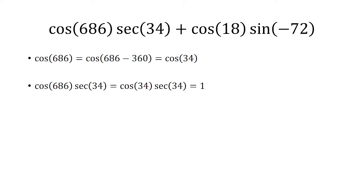So then when I multiply cosine of 686 with secant of 34, that's the same thing as multiplying cosine 34 times secant of 34.